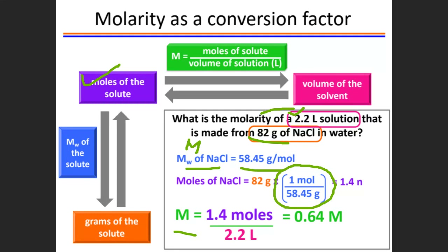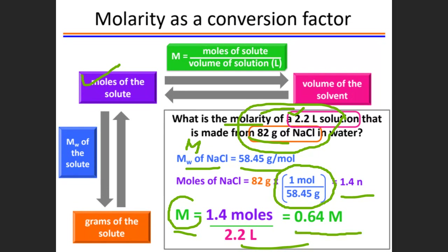We need to find the moles first, because to calculate molarity M, we need the mole amount. Convert the grams to moles, then divide moles by liters. We get 1.4 mol divided by 2.2 liters. So for 82 grams of sodium chloride dissolved in 2.2 liters of water, our solution concentration is 0.64 molar.